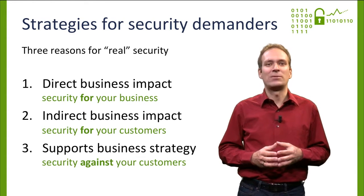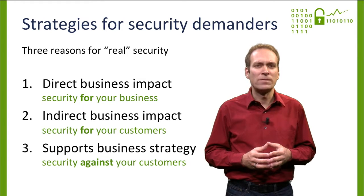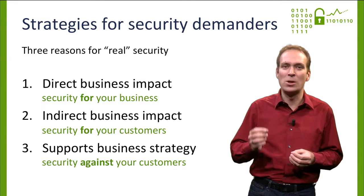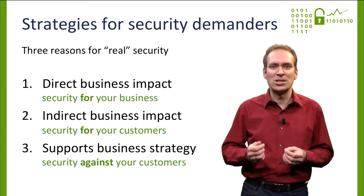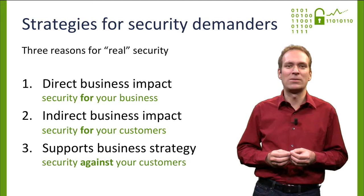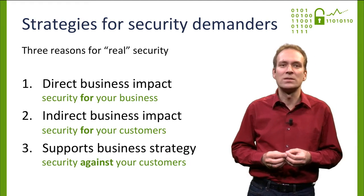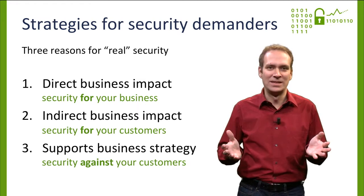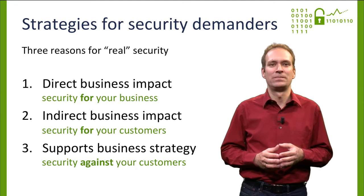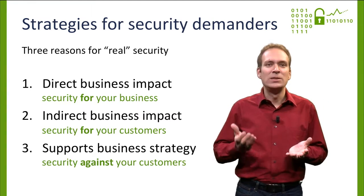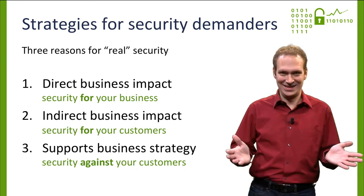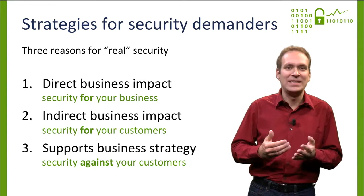The third reason to add real security is less charitable. I am talking of cases where security supports your business model, for example by amplifying customer lock-in. Digital rights management, intentional incompatibility, and Ross' earlier example of cryptography in printer cartridges belong to this category. For comparison, reason three is when you add security against your customers. In all three cases, your organization has an interest in that the security mechanisms are not only efficient and cheap, but also effective in thwarting the attacker's intentions.